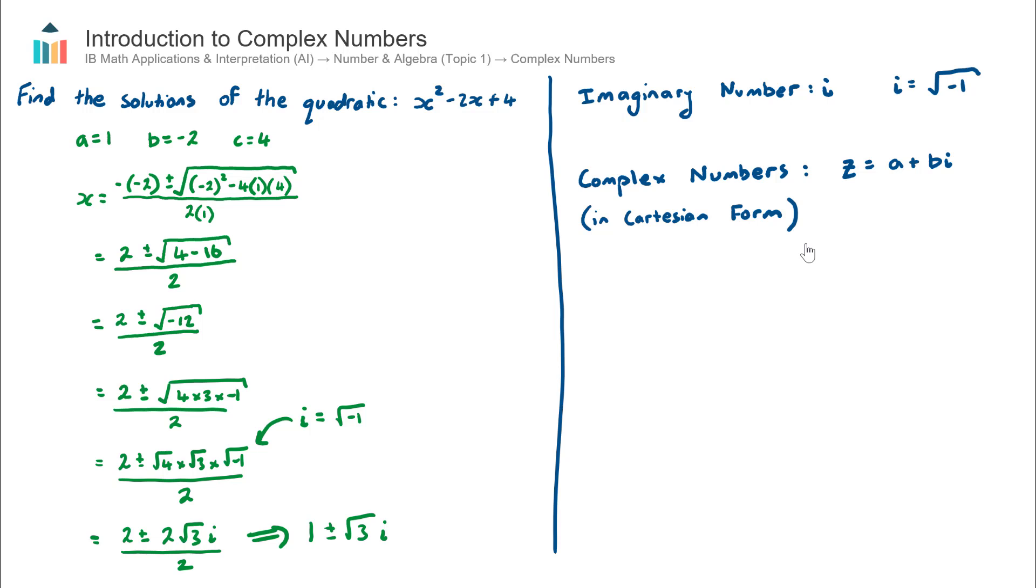So as an example, let's just say z is equal to - and I'll use this example that I brought down from the first example - I'll just use the positive version of this. So this example will be 1 + √3i.